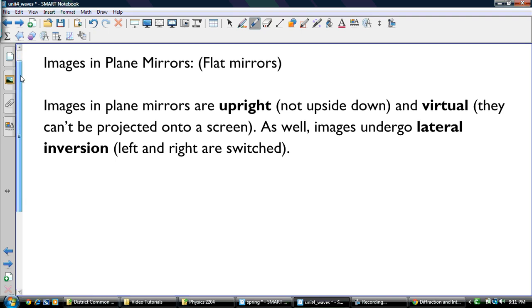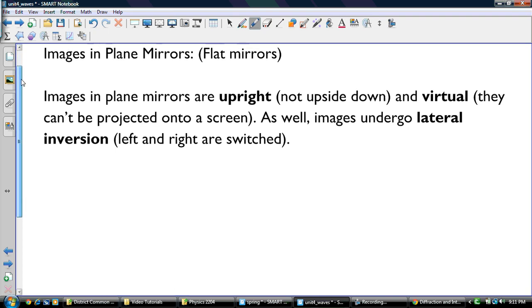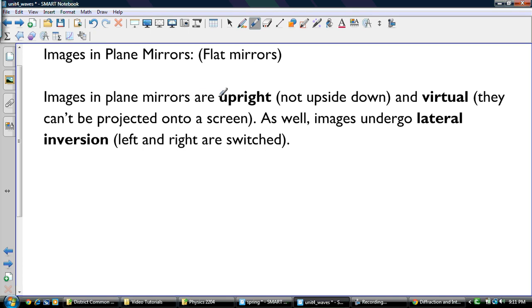I really didn't talk a lot about mirrors, because it's not a huge topic, but all you really need to know about mirrors is what's stated here. Images in plain mirrors are upright, not upside down, and virtual. They cannot be projected onto a screen, as well as they undergo lateral inversion. So left and right are switched. If you have an object here, it's exactly the same distance away. So if this is 2 meters, then this is 2 meters, and the images are 4 meters apart.